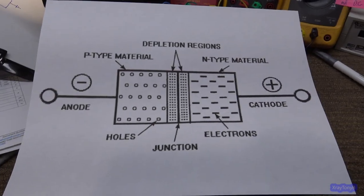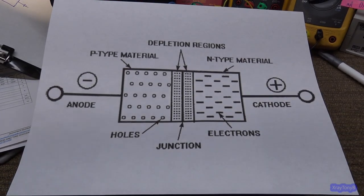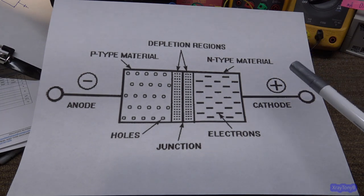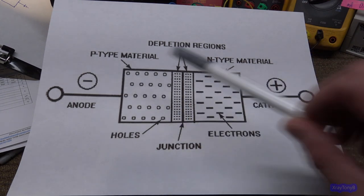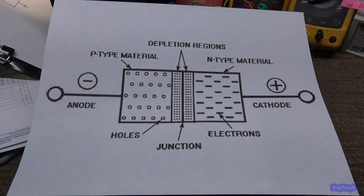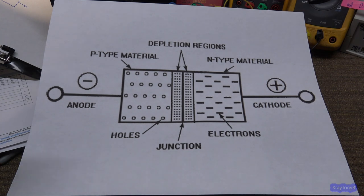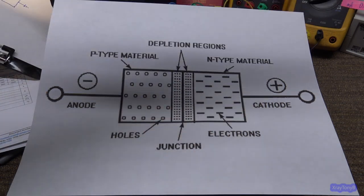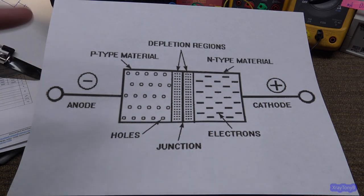A quick comment about the first video: one of you mentioned why I have the terminals marked backwards — cathode and anode. Isn't the cathode supposed to be negative and the anode positive? Well, when we talk about polarity in an electric circuit, you have the charge polarity of the device, but you also have the polarity that you connect the circuit to, and they can be opposite one another.